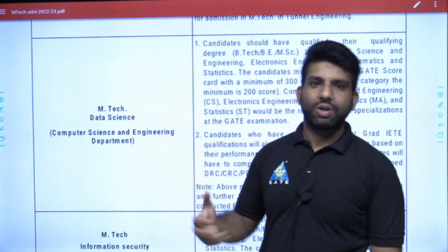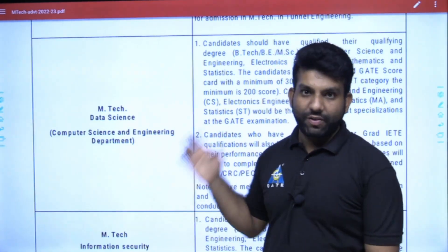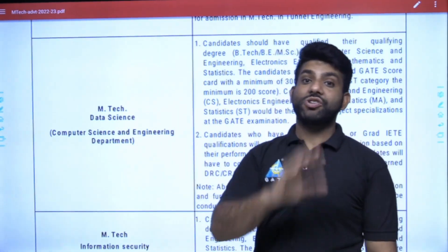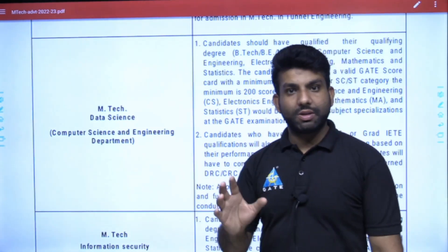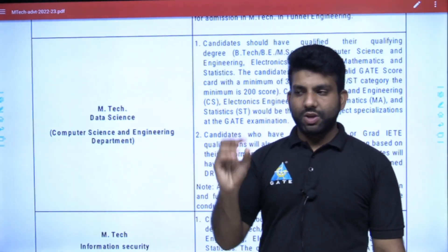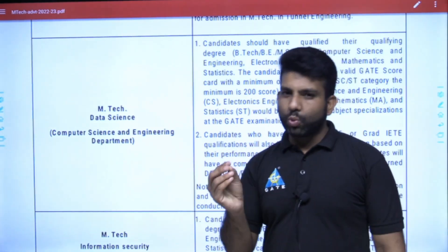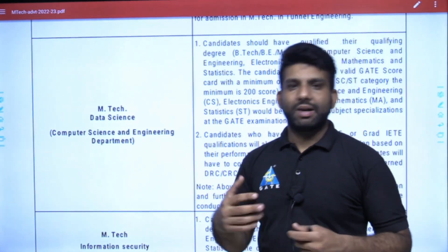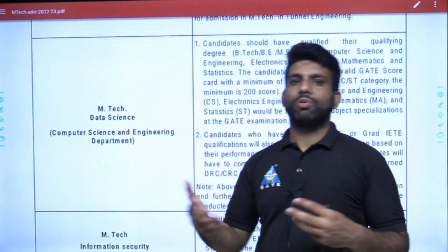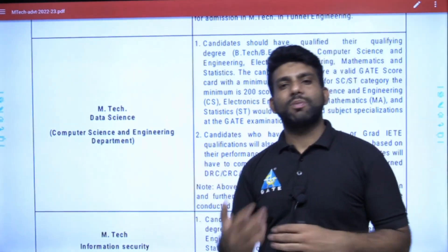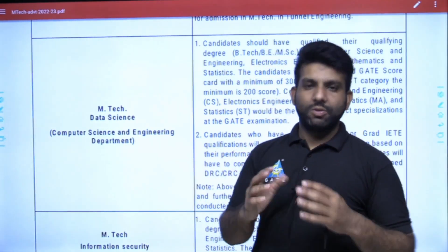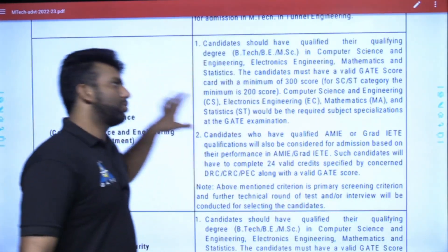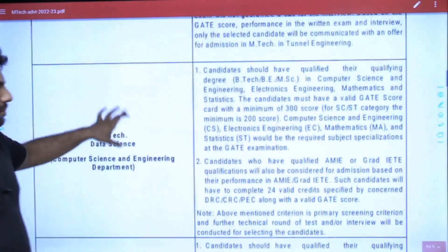If your GATE score is 500 and above, for General, EWS, and OBC categories, you must apply. OBC candidates can go a bit lower — around 450 GATE score. For SC/ST and PwD candidates, 300 plus is sufficient, so you must apply.